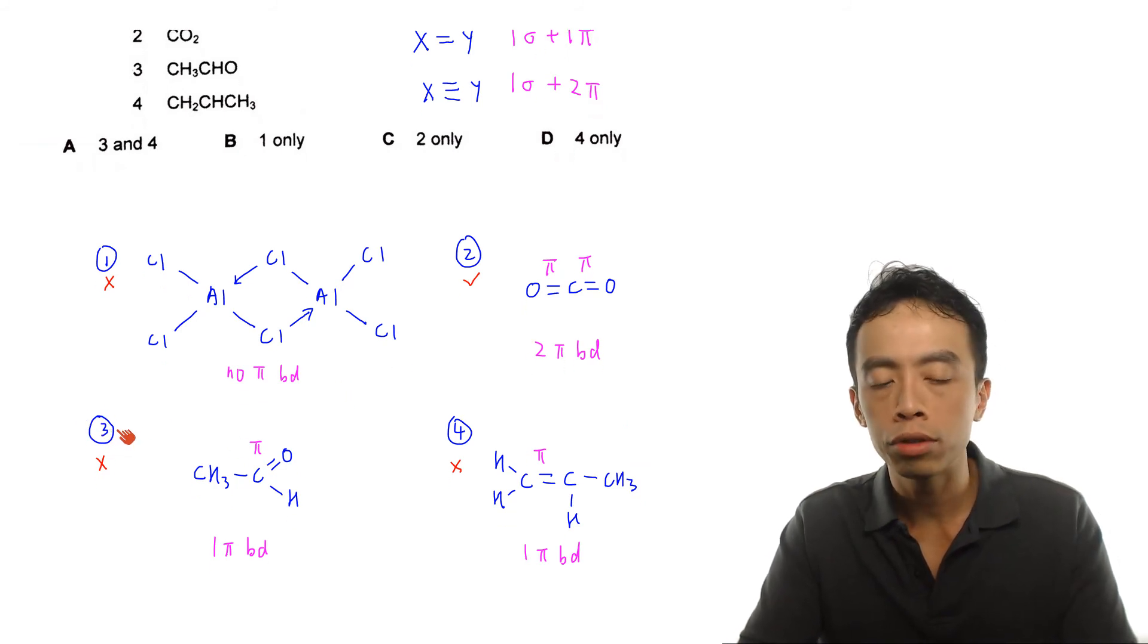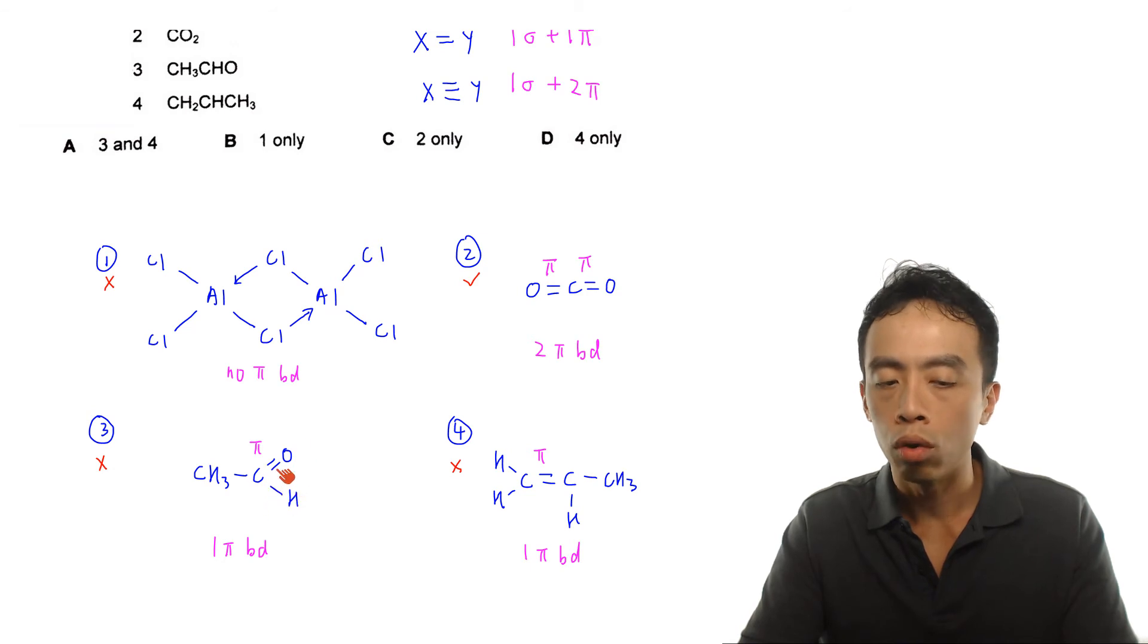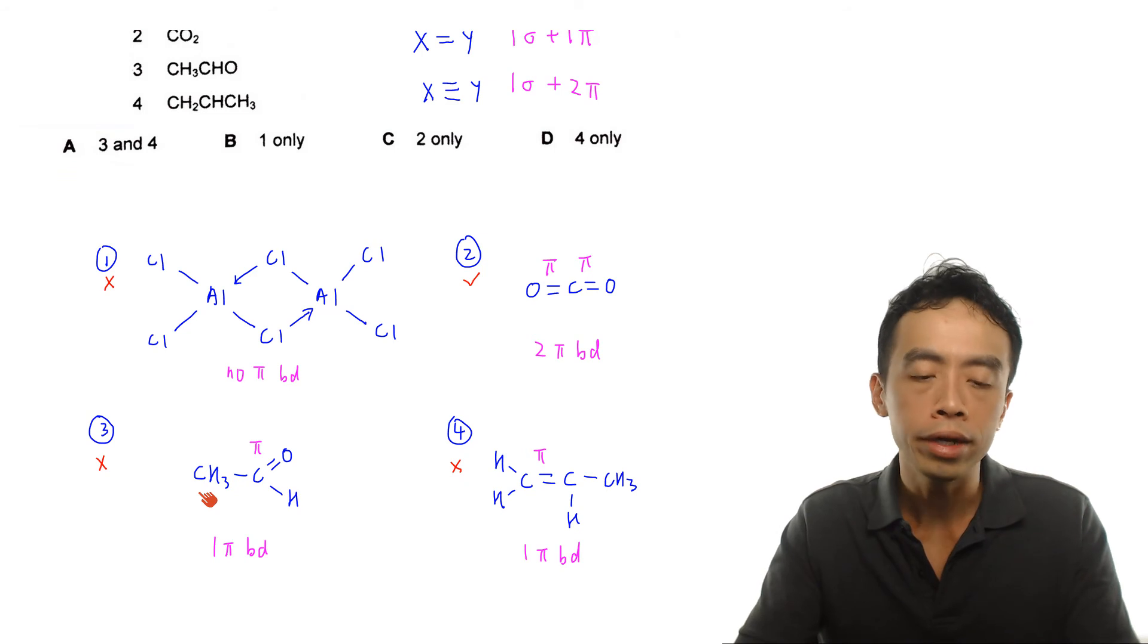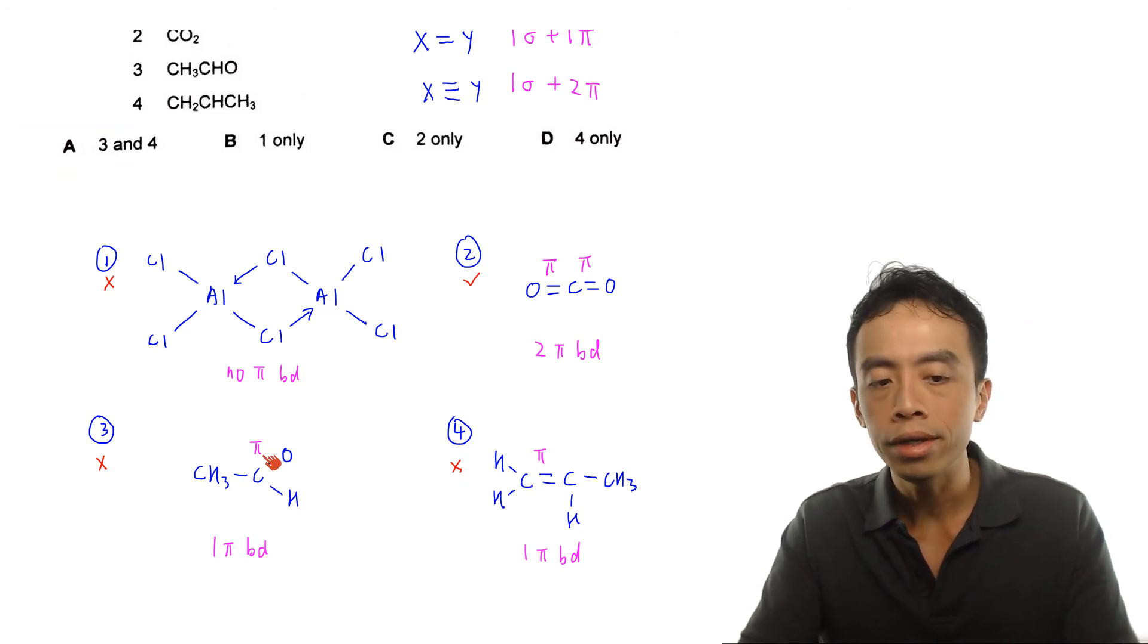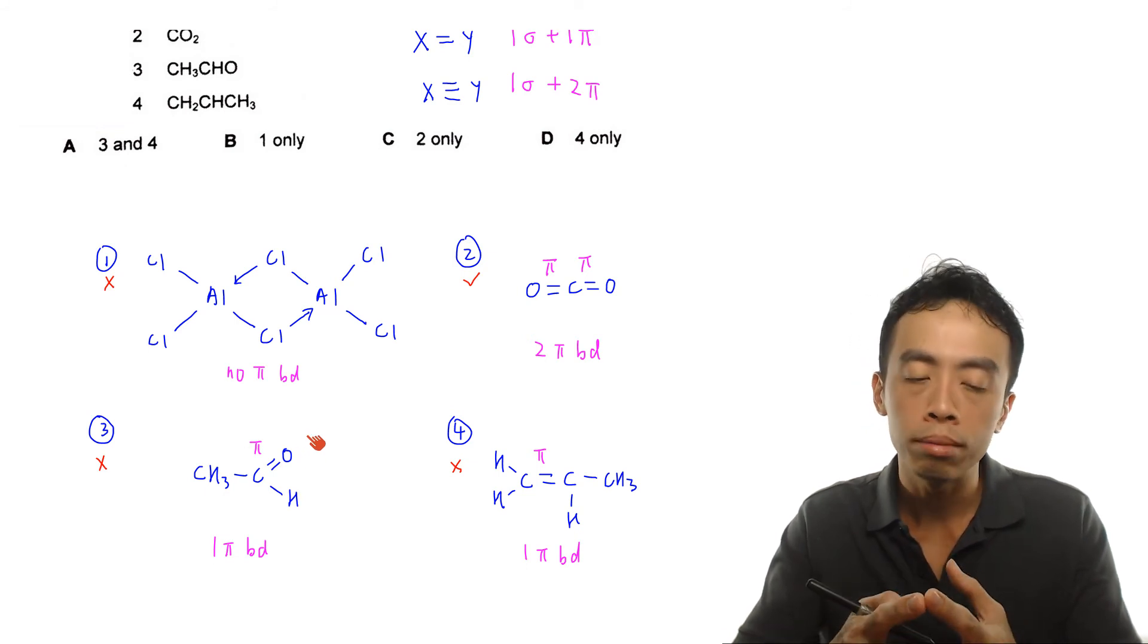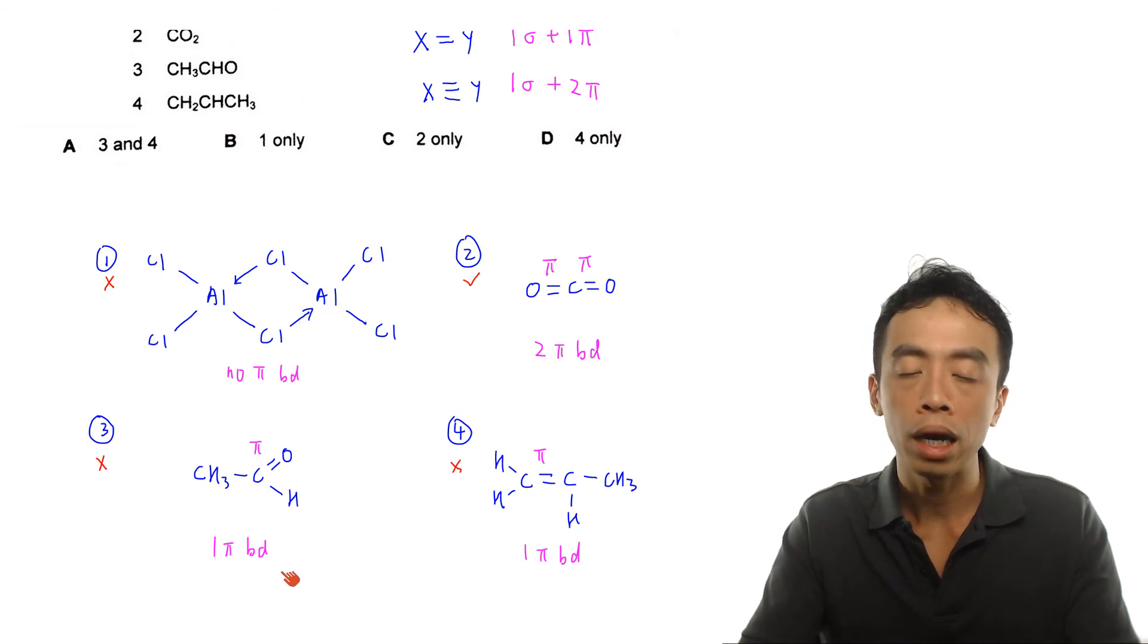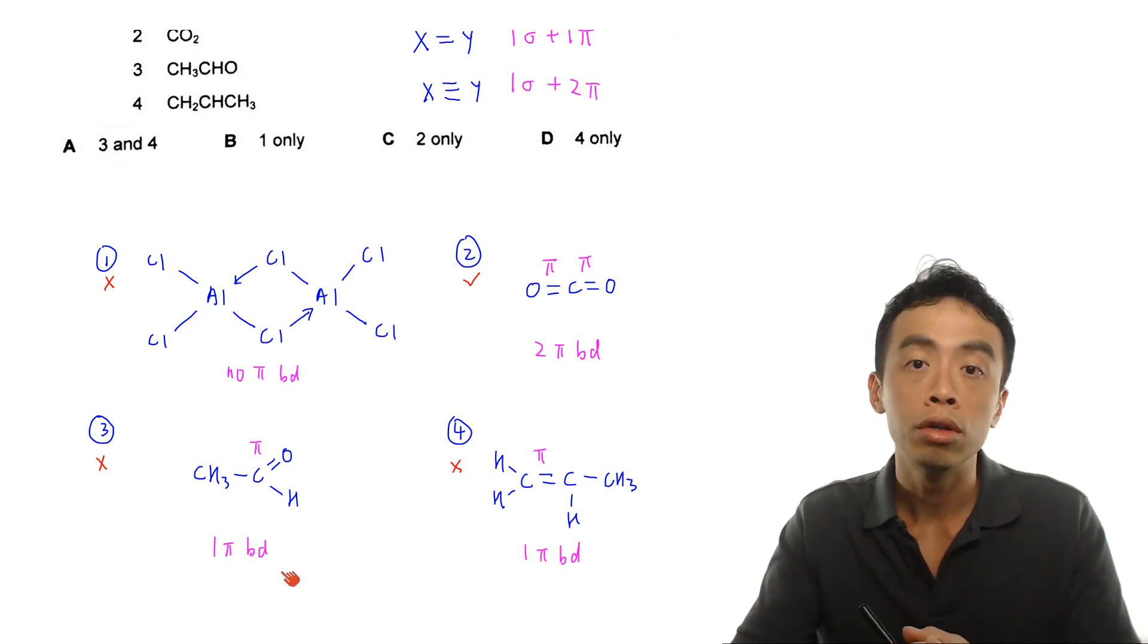Now if I look at option three, option three which is an aldehyde, CH3, C double bond O, hydrogen. Now I didn't draw the CH3 bonds because it is saturated. So all these bonds will be single bond and sigma bonds. So basically we can ignore that. We just focus on the C double bond O. Now C double bond O, this is a double bond. So therefore you will have one sigma and one pi bond. In this case, this guy has only one pi bond. So therefore it is not part of the answer.